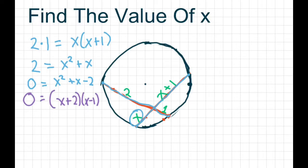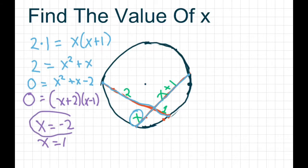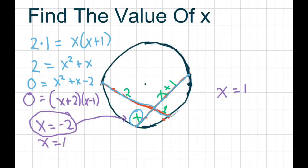So what we get is X equals negative 2 and X equals 1. However, X can't be negative 2. You could plug in negative 2 into both of these X's — X equals negative 2 doesn't make sense. You can't have a length that's negative. So our final answer is X equals 1.